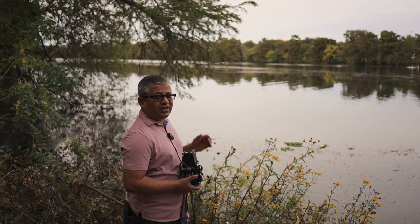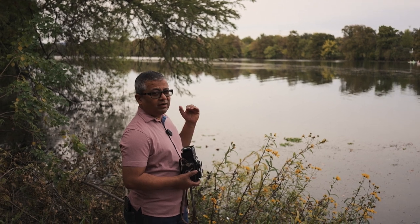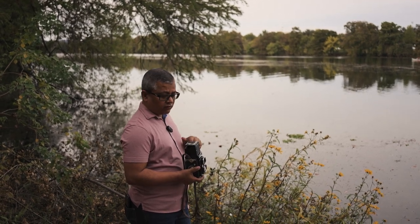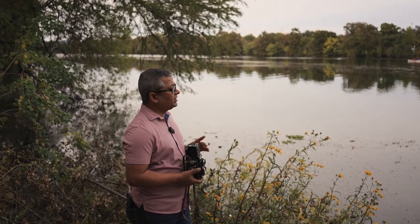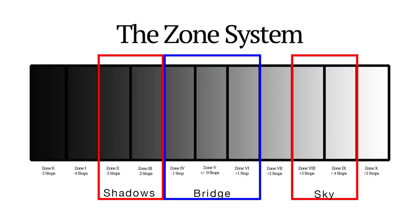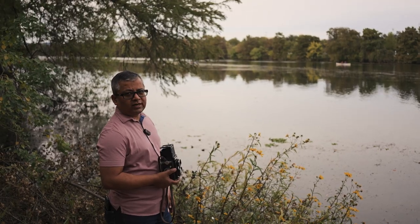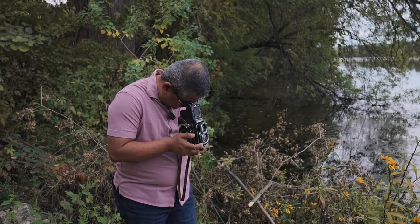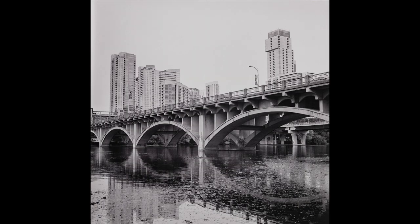The meter tells me f11 at a shutter speed of 1/60. I have 400 ISO film in this. I don't want to blow the sky — I put it at around zone nine, maybe eight, and then the bridge at mid-gray. Let's shoot and see what happens. That was our first shot.